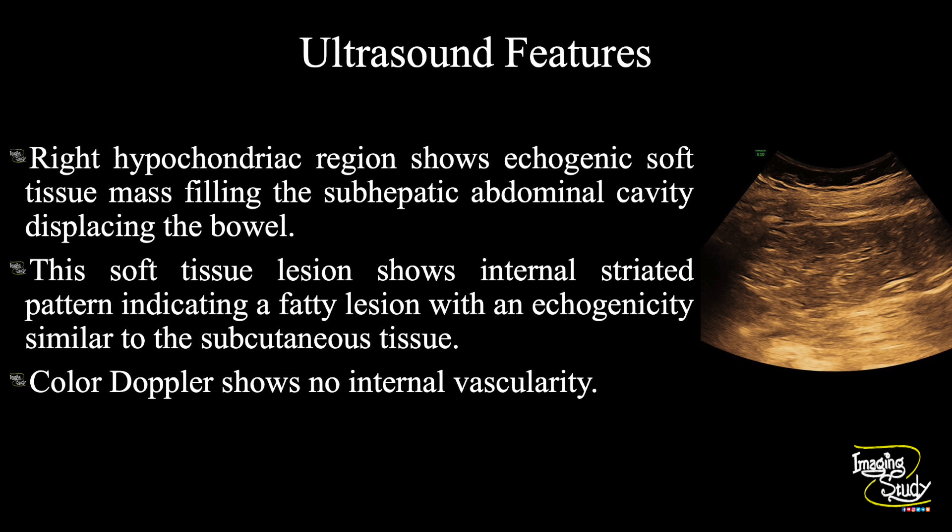In summary, the right hypochondriac region shows an echogenic soft tissue mass filling the subhepatic abdominal cavity, displacing the bowel. This soft tissue lesion shows an internal striated pattern indicating a fatty lesion, with echogenicity similar to the subcutaneous tissue. Color Doppler shows no internal vascularity. These features conclude it as a case of abdominal lipomatosis.